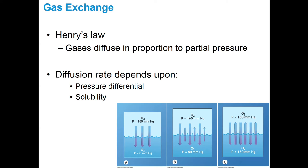As pressure goes down, there's less of a driving force pushing gas into the blood, leading to decreased oxygenation. Conversely, during exercise, muscle cells produce lots of carbon dioxide as a byproduct of ATP production, raising PCO2 in the muscle and creating a large driving force pushing CO2 from muscle into the bloodstream. At rest, that pressure differential isn't as great.